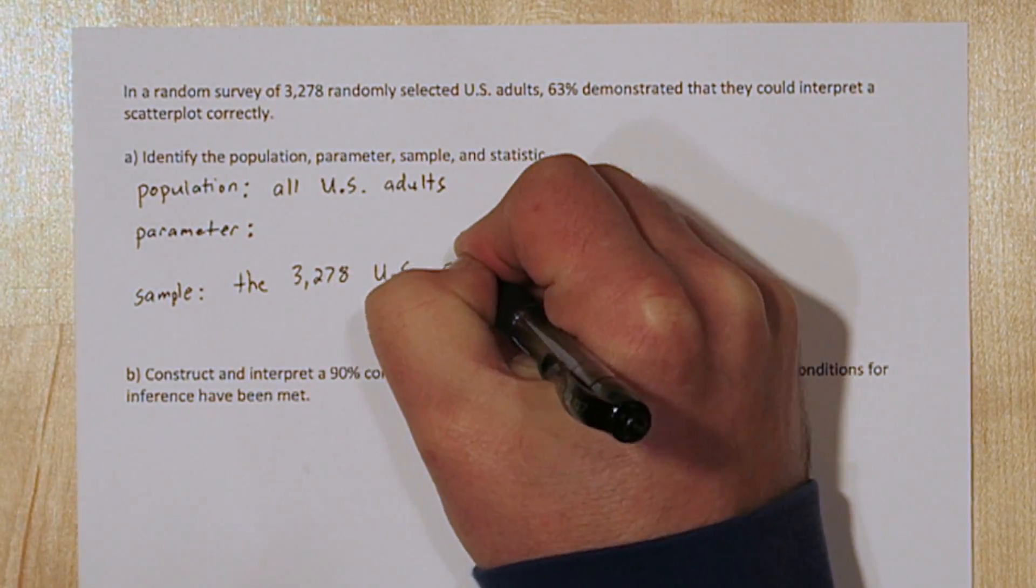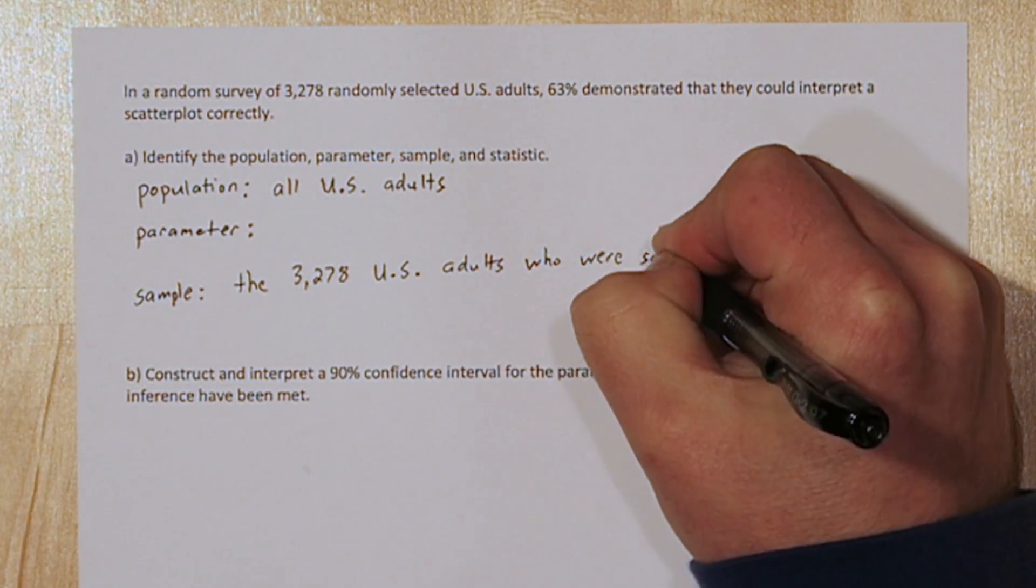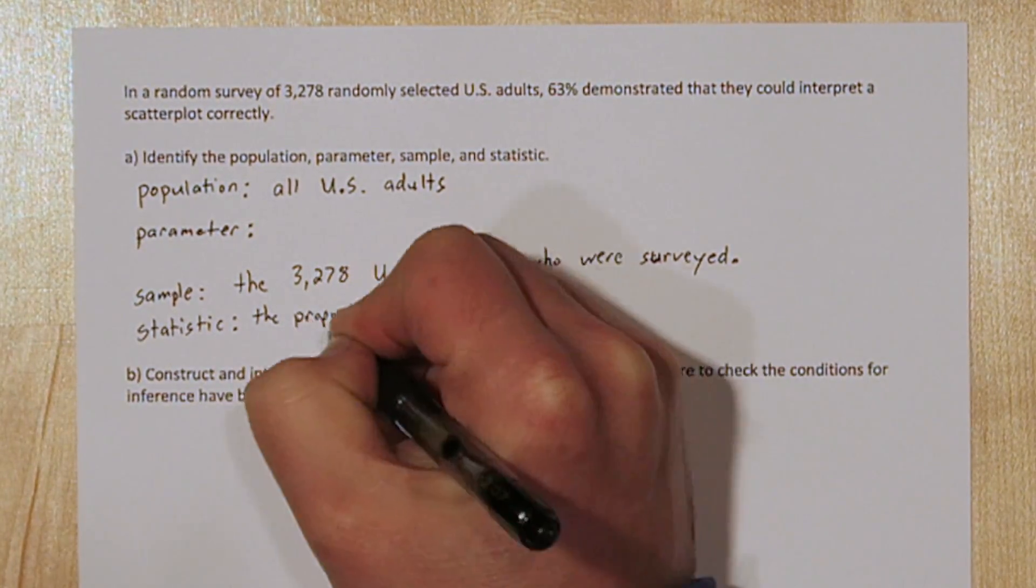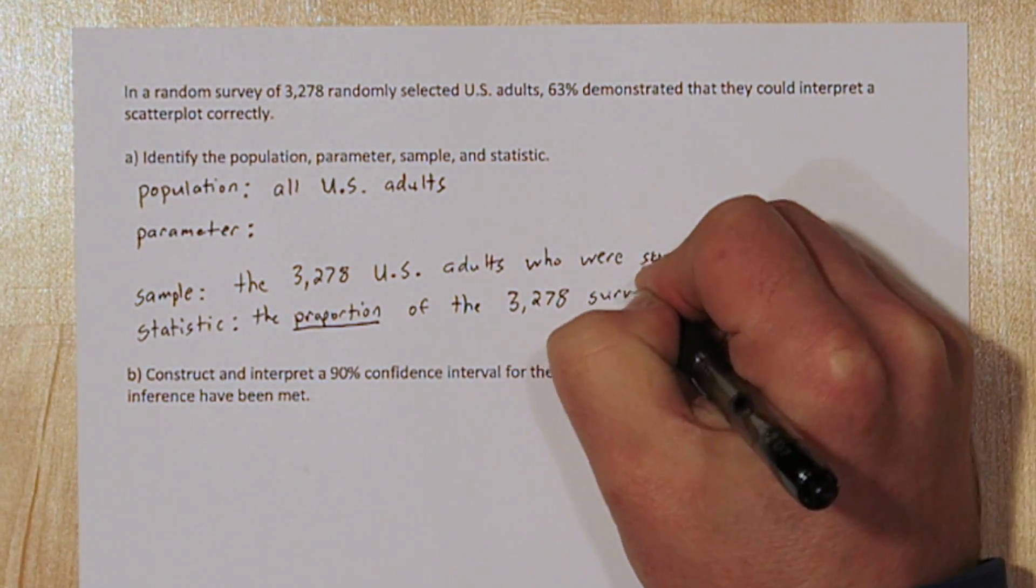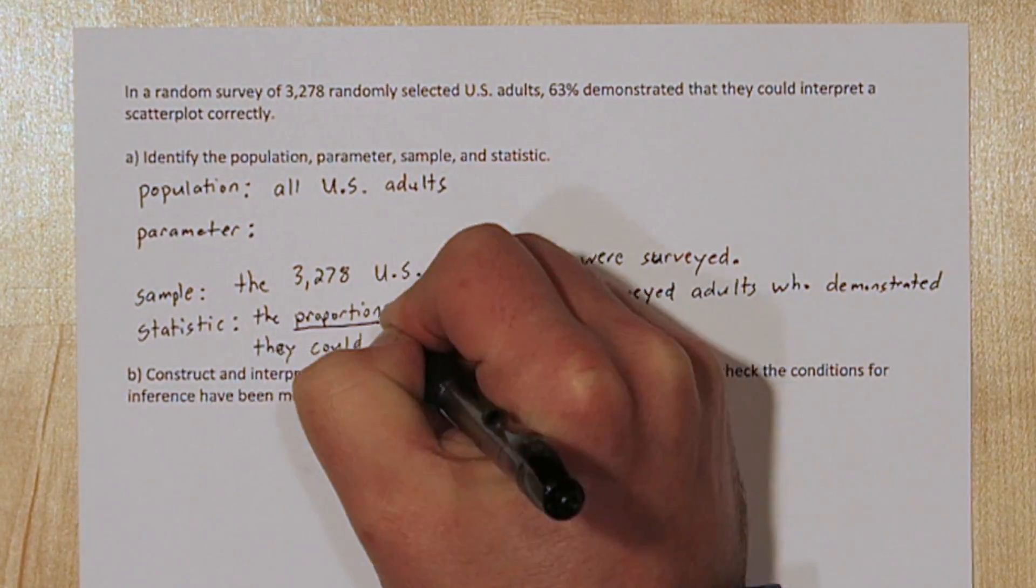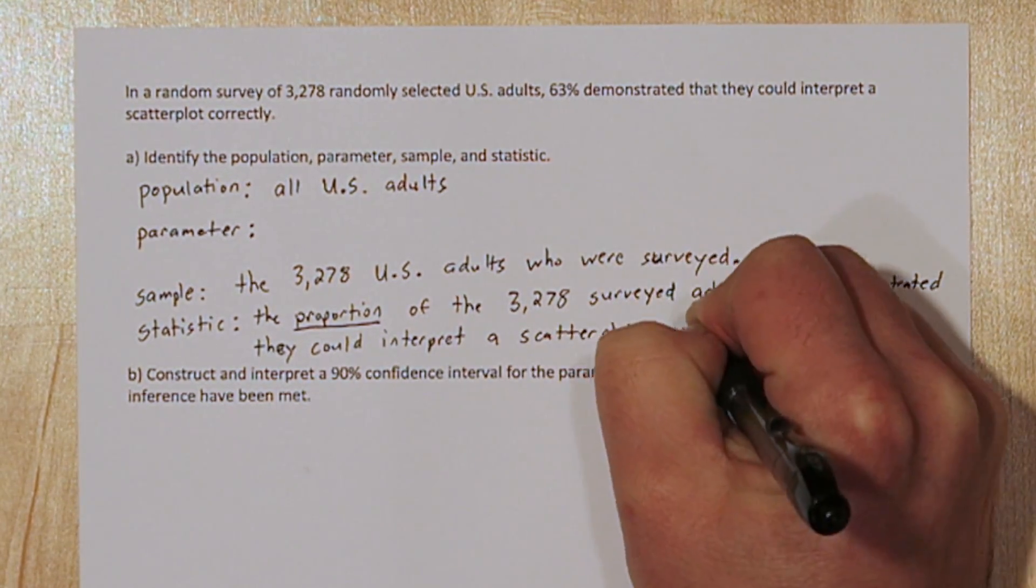The sample is the 3,278 U.S. adults who were surveyed. The statistic is the proportion of the 3,278 surveyed adults who demonstrated they could interpret a scatter plot correctly. In this case it was 63%.